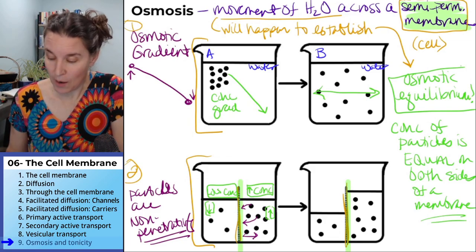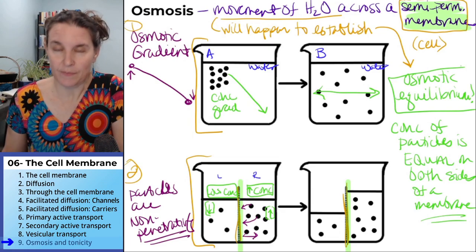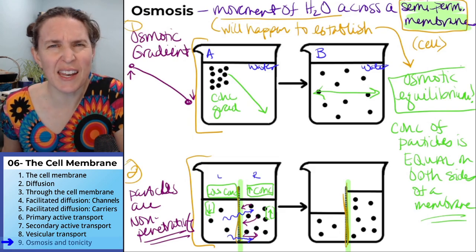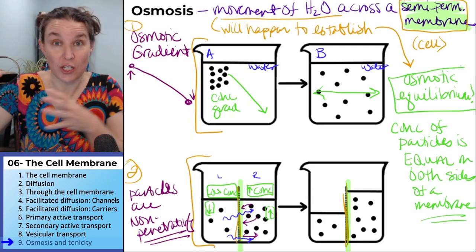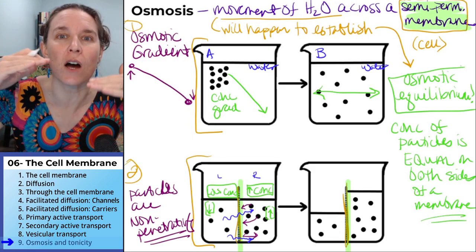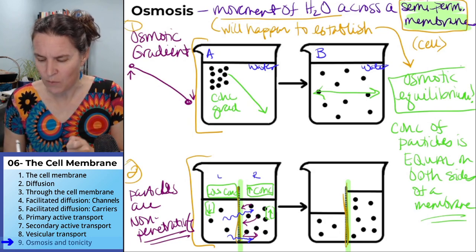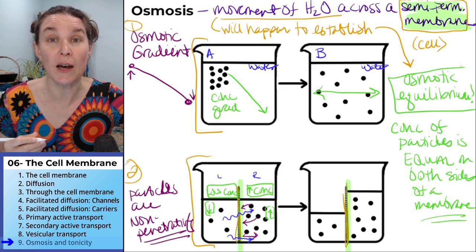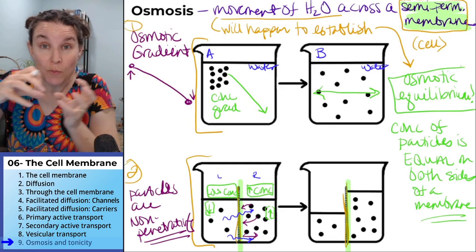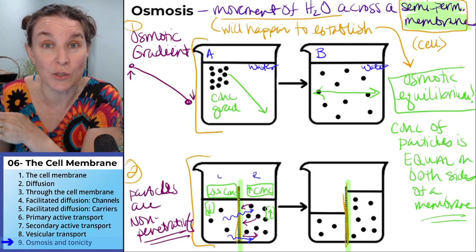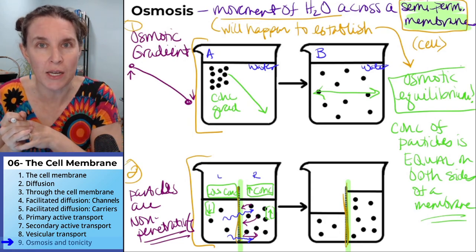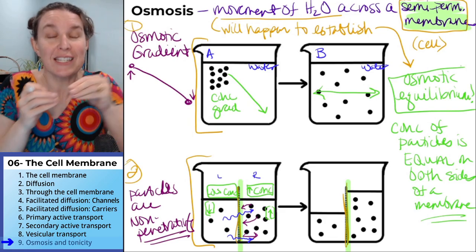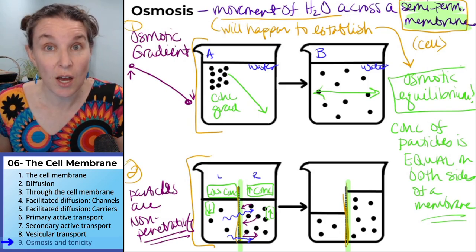Well, those particles, they want to move left. But water, water wants to move right. Do you agree with that? Water wants to dilute the concentration on the other side so that we can have the concentrations equal. Would it work if water moved the other direction? If water moved to the left, the left would become more dilute. If water moves to the right, the right becomes more dilute, less concentrated. Which one, if we want osmotic equilibrium, which one needs to become less concentrated? That's where water is going to go. Water is going to go to where it can make things less concentrated to establish osmotic equilibrium.